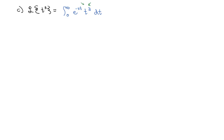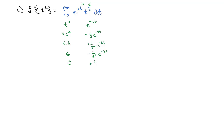Because we have a polynomial, we can use the tabular integration by parts shortcut. We list the polynomial and its derivatives: t cubed, 3t squared, 6t, 6, and 0. On the other side, e to the negative st and its successive antiderivatives: negative 1 over s times e to the negative st, positive 1 over s squared times e to the negative st, negative 1 over s cubed times e to the negative st, and positive 1 over s to the fourth times e to the negative st. We multiply down the diagonals, alternating signs: positive, negative, positive, negative.